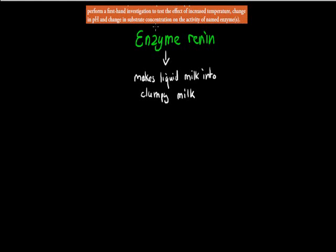Welcome back. Today we're going to go over a practice we've done in class. The practice is to test the effect of increased temperature, change in pH, and change in substrate concentration on the activity of a named enzyme. The enzyme I chose — you might have done a different enzyme in class — is the enzyme renin.